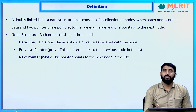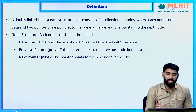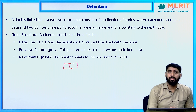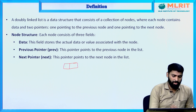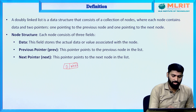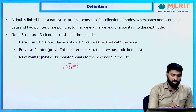Before seeing the definition of double linked list, we are going to discuss some disadvantages we face in single linked list. In a single linked list, a node contains two parts: one is to store data, and the second part is to store the next node address. So what is the disadvantage in single linked list?